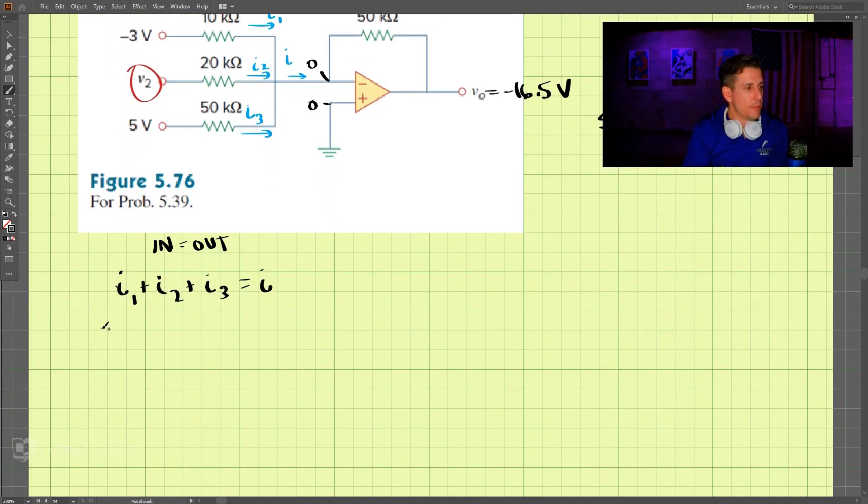So I1 can be written as three minus zero, because this is zero here, three minus zero divided by 10 kiloohms. I'll just write 10 there for right now. Plus V2 divided by 20, plus five volts divided by 50. And that is equal to I.